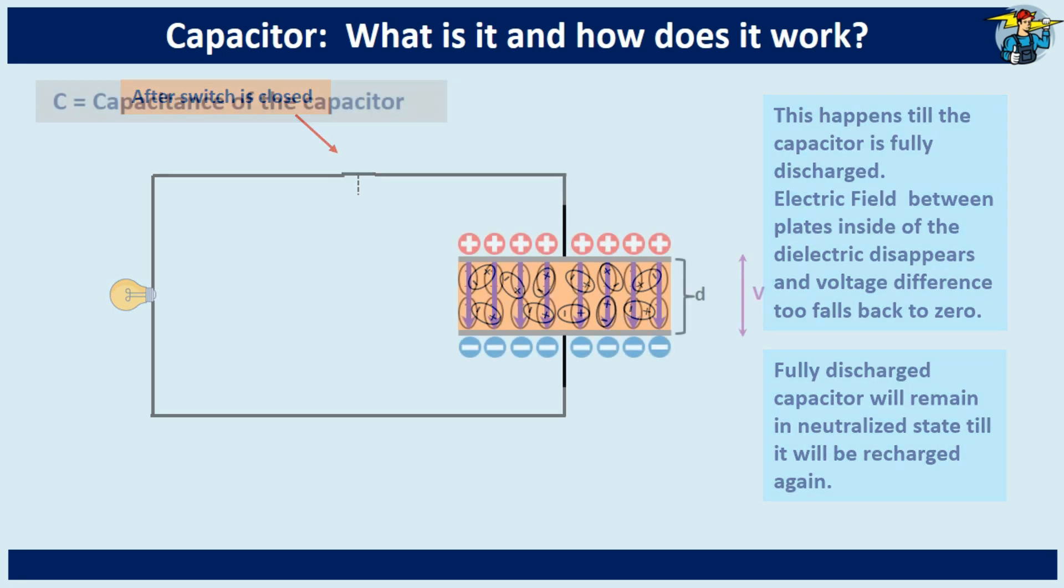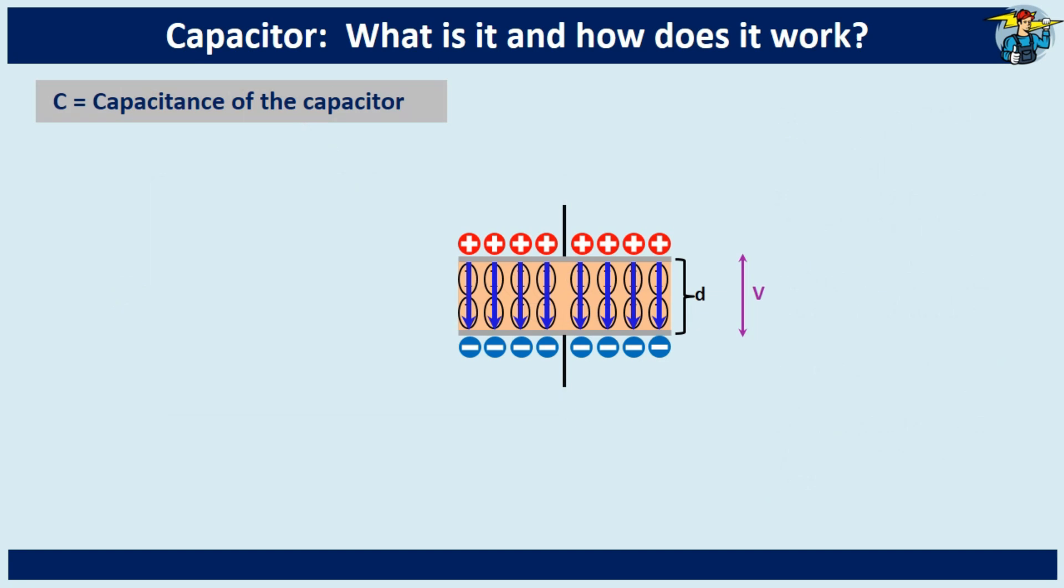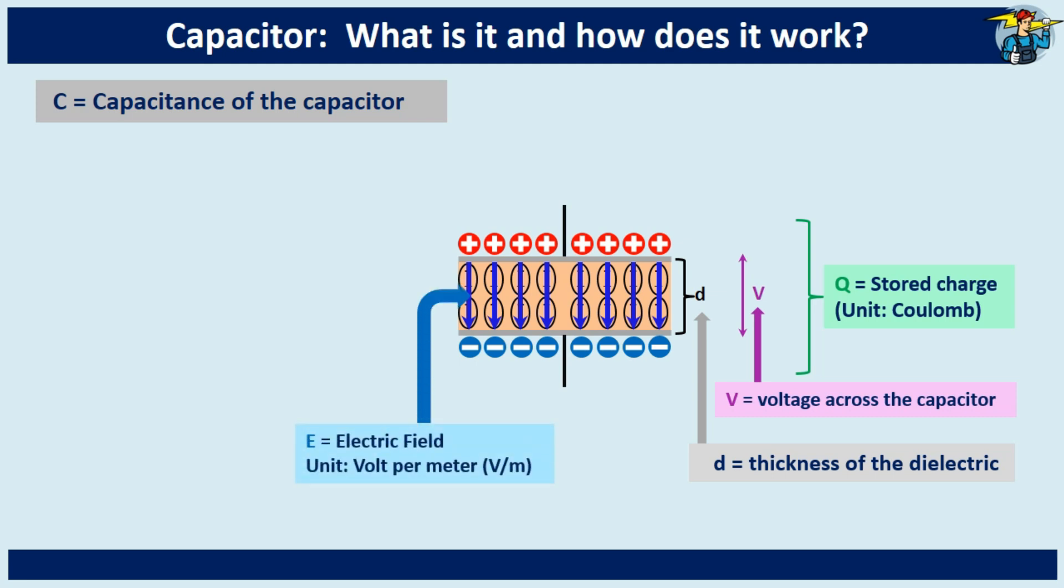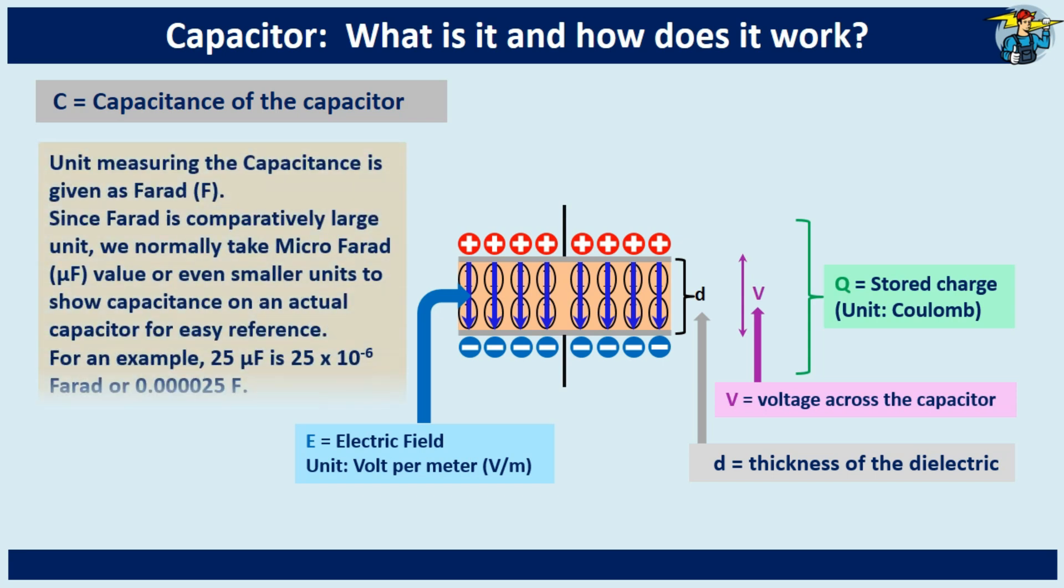Let's see how the capacitance of a capacitor is defined. Mark V as voltage across the capacitor. D is the thickness of the dielectric measured in meters. Q is the stored charge measured in coulombs. Also, E is the electric field, measured in volts per meter. Unit measuring the capacitance is given as farad.